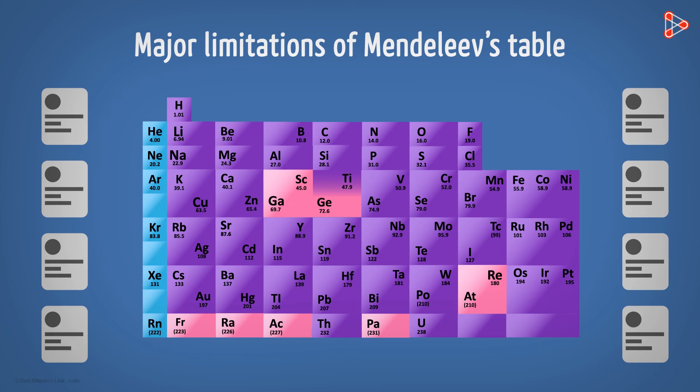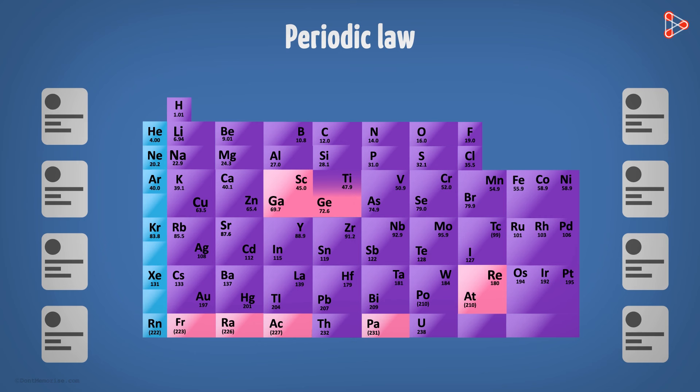Well, if the elements discovered later did not follow the Periodic Law given by Mendeleev, then the only way to arrange them was by modifying the law.